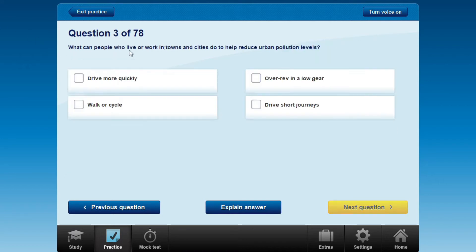What can people who live or work in towns and cities do to help reduce urban pollution levels? The options are: drive more quickly, over-rev in a low gear, walk or cycle, or drive short journeys.